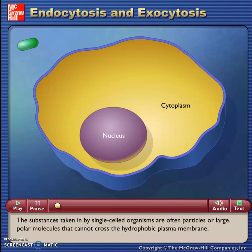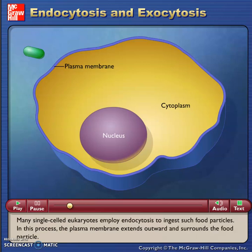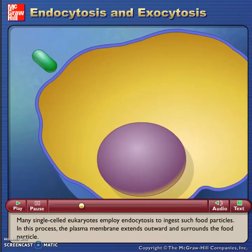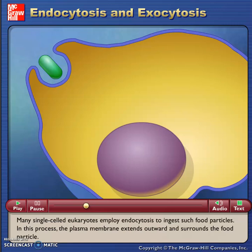The substances taken in by single-celled organisms are often particles or large polar molecules that cannot cross the hydrophobic plasma membrane. Many single-celled eukaryotes employ endocytosis to ingest such food particles. In this process, the plasma membrane extends outward and surrounds the food particle.